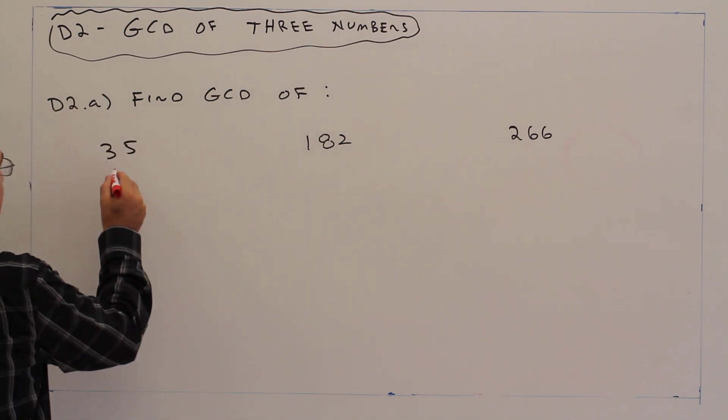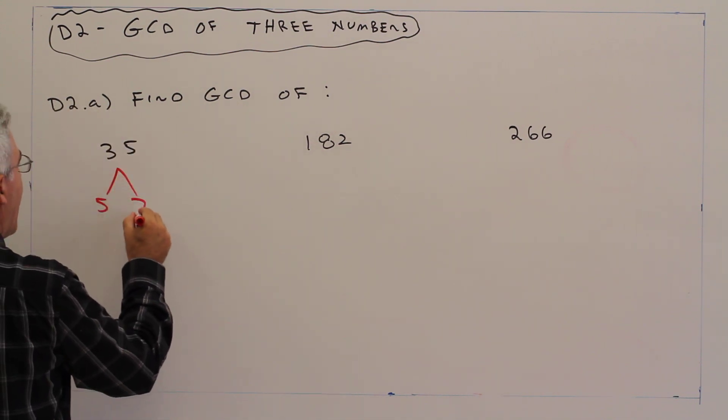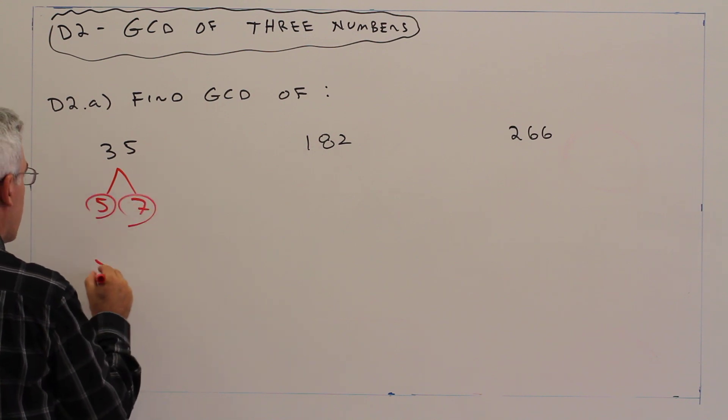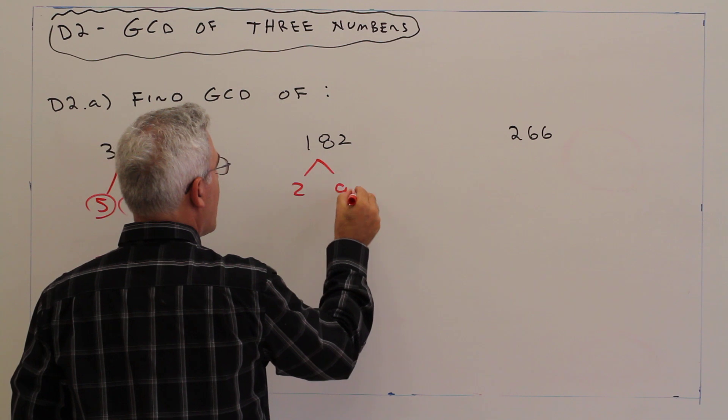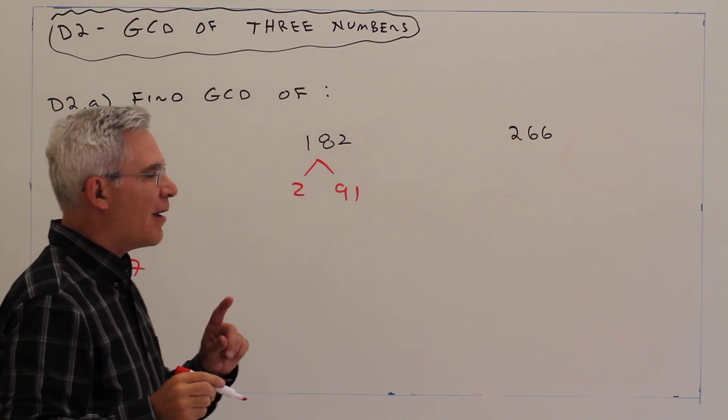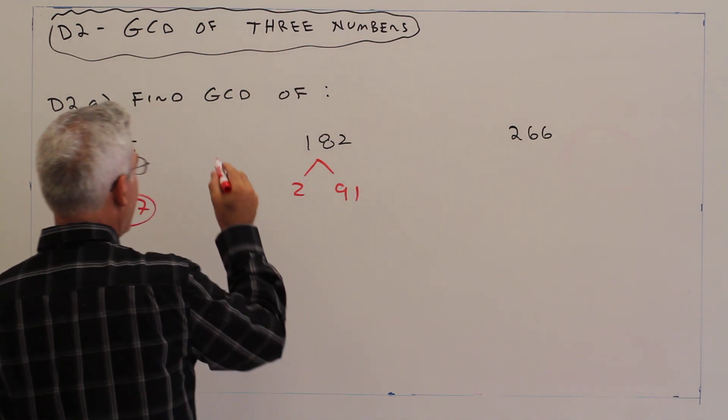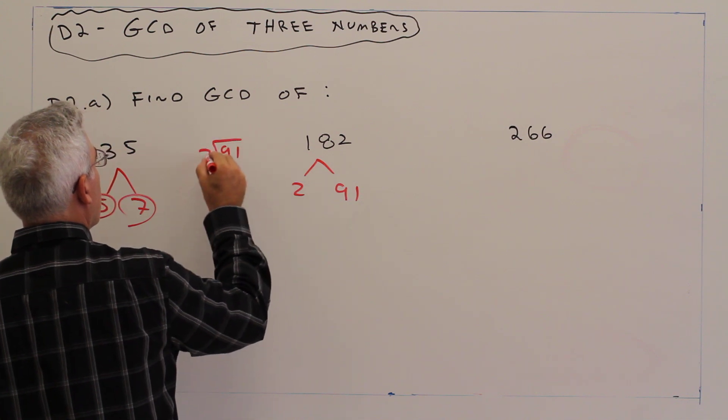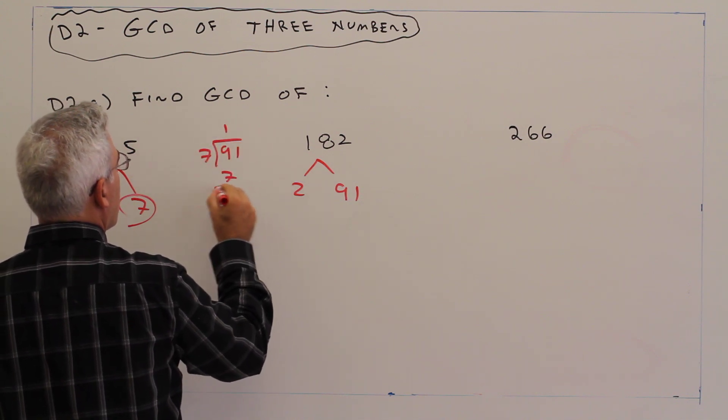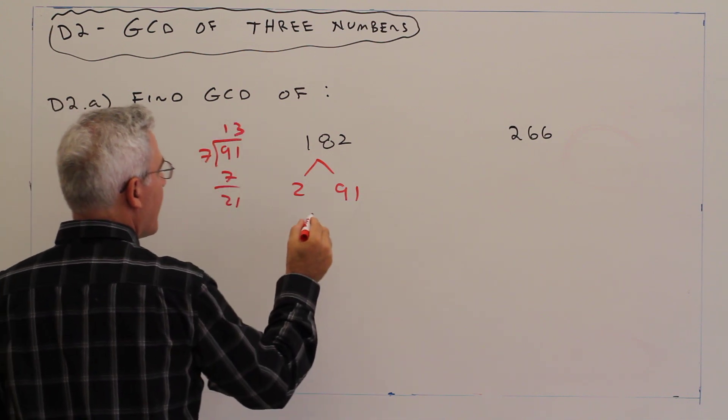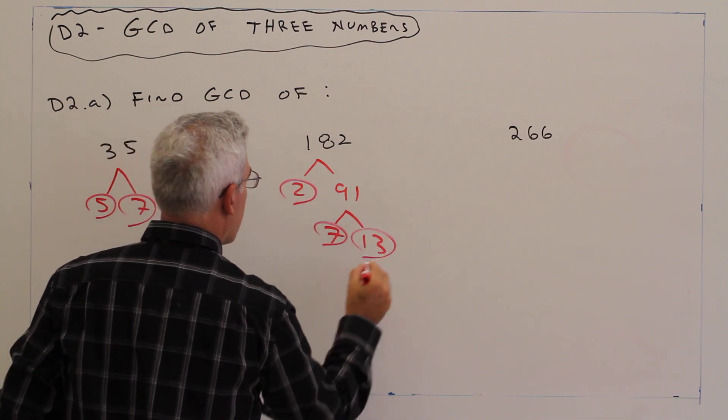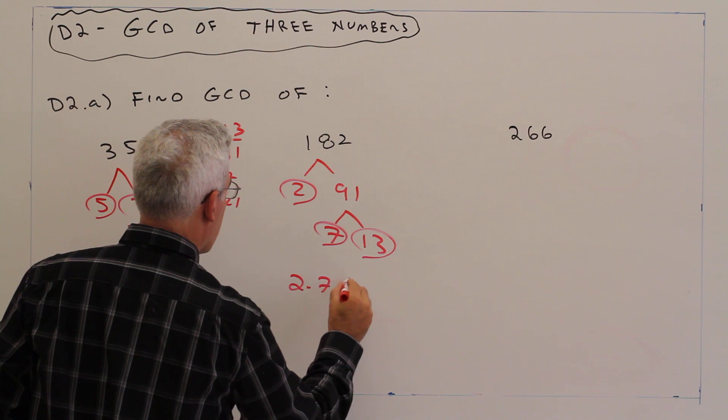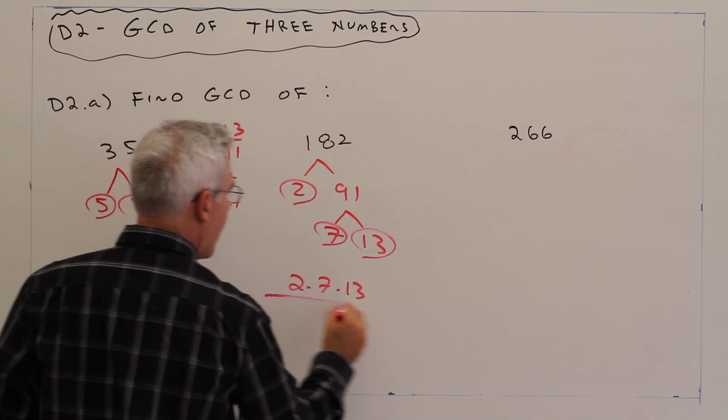So prime factorization: 5 by 7, 2, 91. I believe 7 goes into 91. Let's just check. Yes, 7, 13. So I've got that.